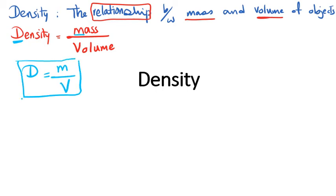This is the equation for density, and I ask you to memorize it: density equals mass over volume. One thing to pay attention to: whenever we say mass over volume, we are talking about only one object. That one object has this relationship — mass over volume.